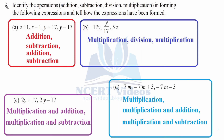Question 3: Identify the operations — that is addition, subtraction, division, multiplication — in forming the following expressions and tell how the expressions have been formed. For part a: z plus 1, z minus 1, y plus 17, y minus 17. In the first case, 1 is getting added — therefore, addition.